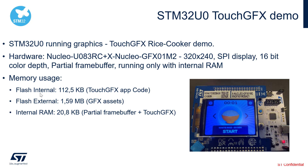The memory usage for this demonstration is as follows: internal flash is using 112.5 kilobytes, and external flash — on the expansion board — is using approximately 1.6 megabytes of data, which covers all the graphics assets. Internal RAM usage is 20.8 kilobytes, used for the partial frame buffer and TouchGFX.